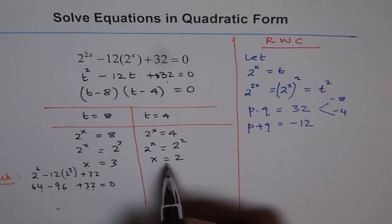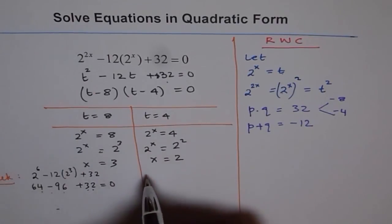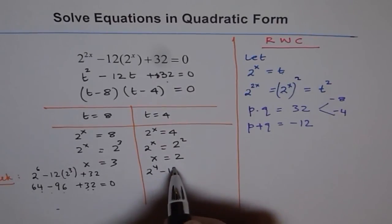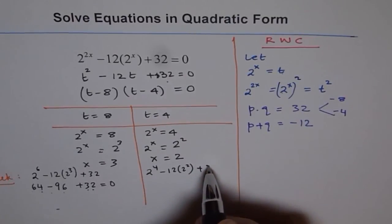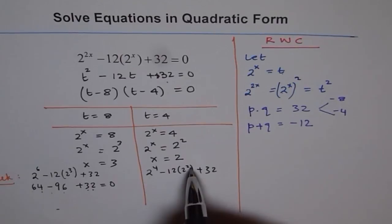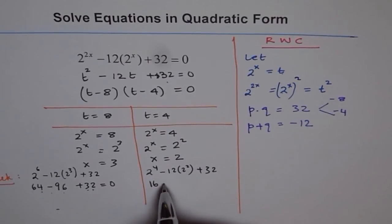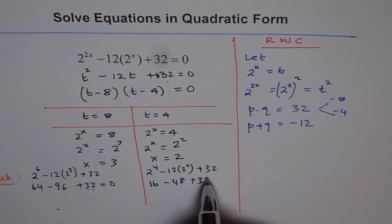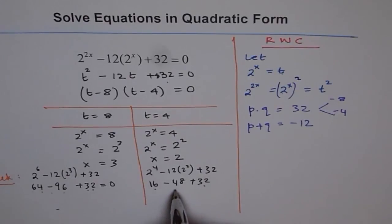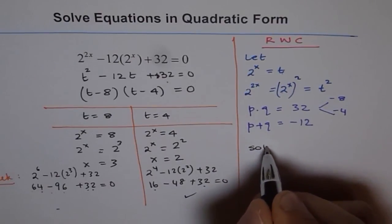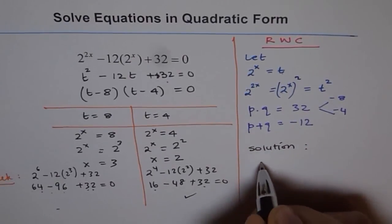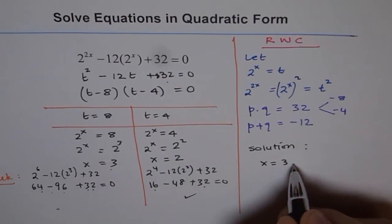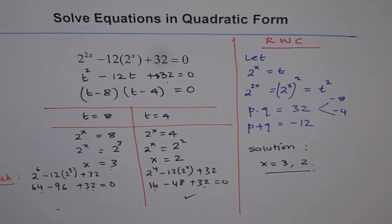Similarly, let's check this side. 2 to the power of 2x will make it 2 to the power of 4 minus 12 times 2 to the power of 2 plus 32. 2 to the power of 2 is 4. And 4 times 4 is 16. So it is 16 here minus 12 times 4 which is 48 plus 32. Now 16 plus 32 is 48. 48 minus 48 is 0. So that also works. Therefore, our solution is x equals 3 or 2. So both are our solutions. Thank you.